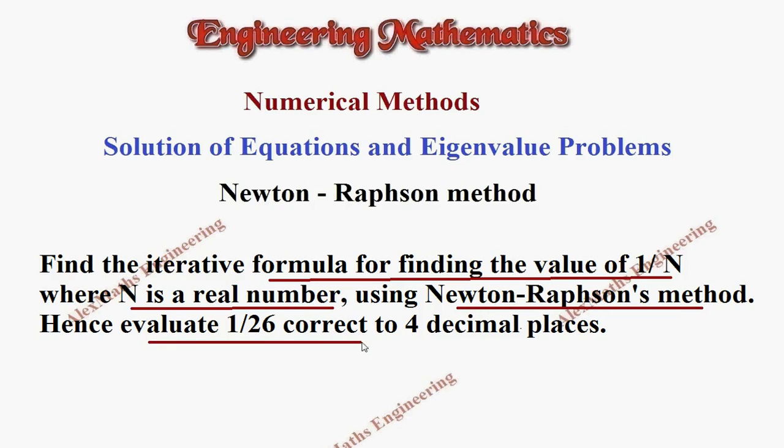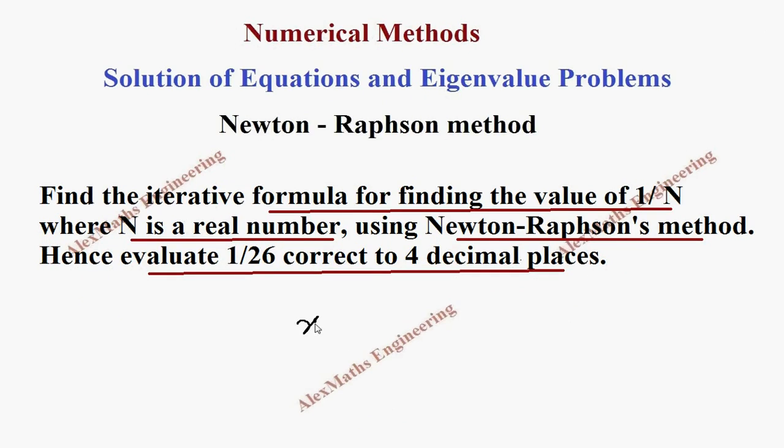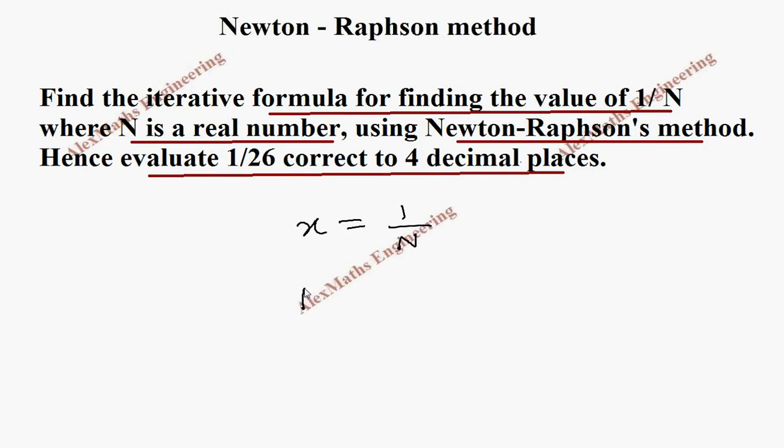Let's take x as 1 by N. Now taking N here and the x to the other side, we get N equal to 1 by x. And using this, let's write the function f of x by bringing all terms to one side.